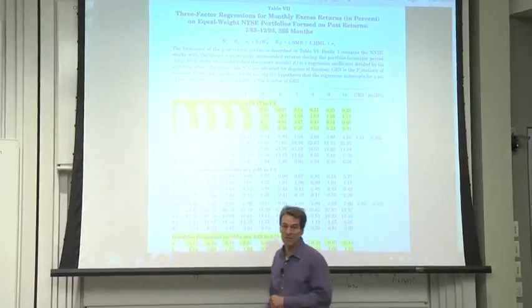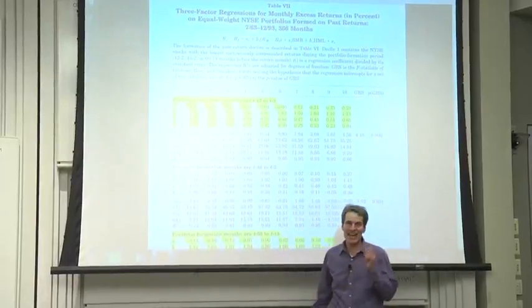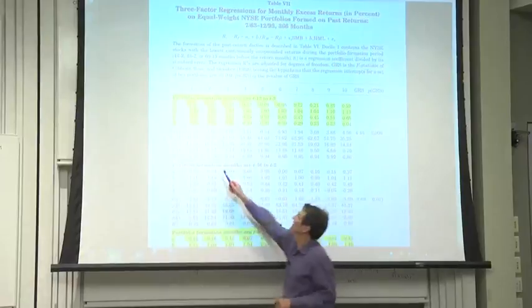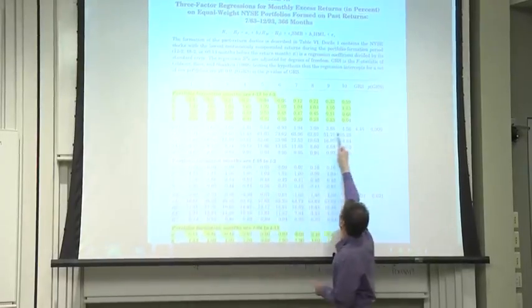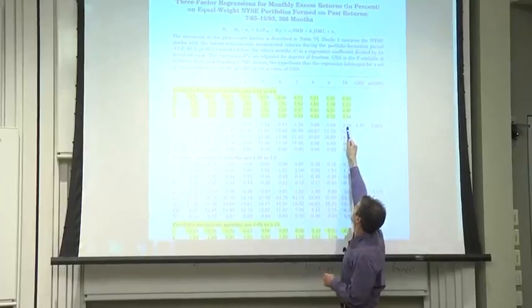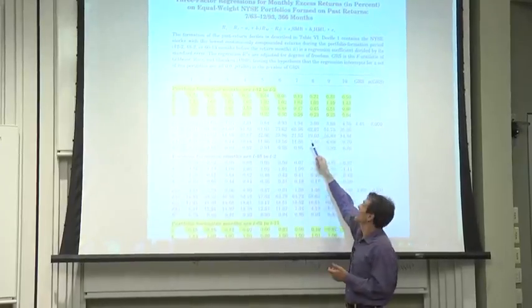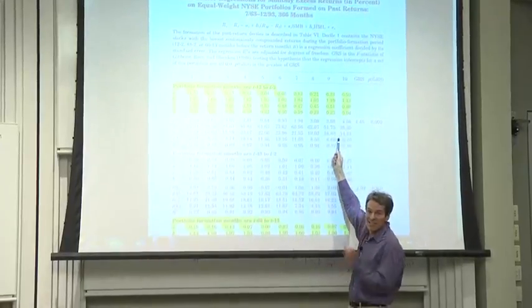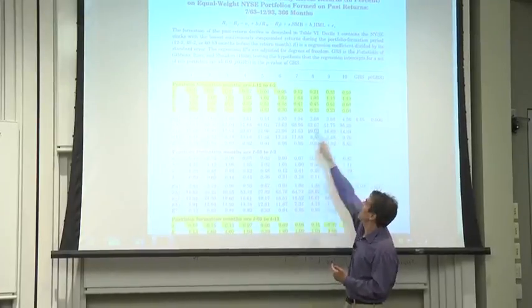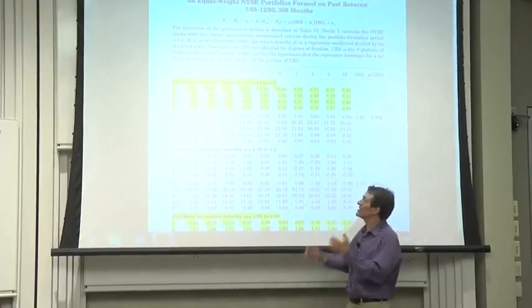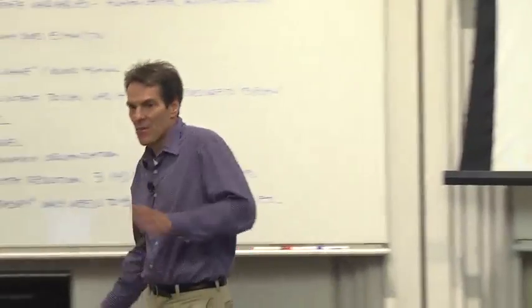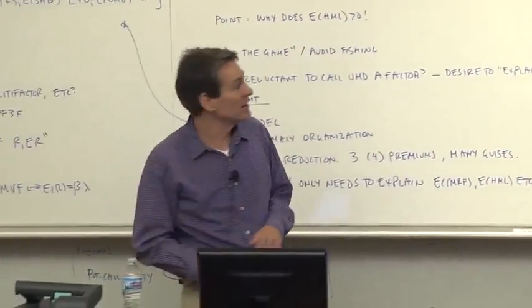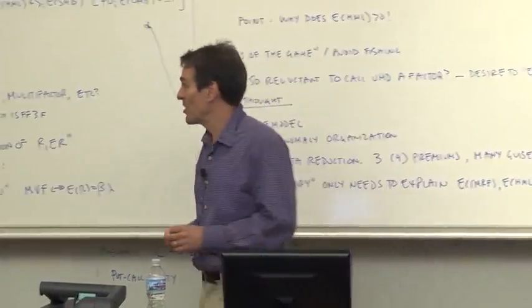Where there was big variation, expected returns, except it's exactly in the wrong direction. The losers have big betas and terrible returns. The winners have big returns and no beta. This model is not only useless, it's counterproductive. The alphas are bigger than the expected returns. It's a total disaster. It goes the wrong way. It makes the puzzle worse rather than better. Value and momentum are negatively correlated in that way.